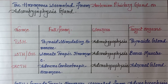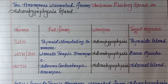Next is the STH hormone, that is somatotropic hormone. The source is the adenohypophysis and the target organs are bones and muscles. Next is ACTH, that is adrenocorticotropic hormone.